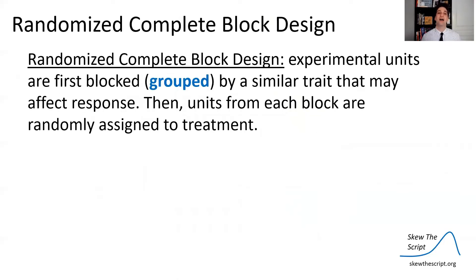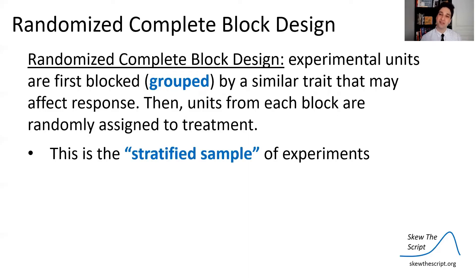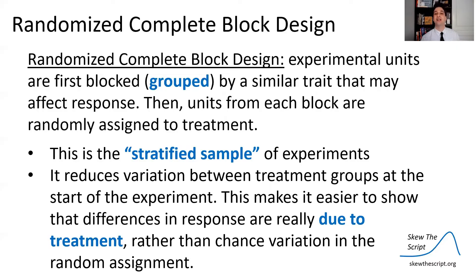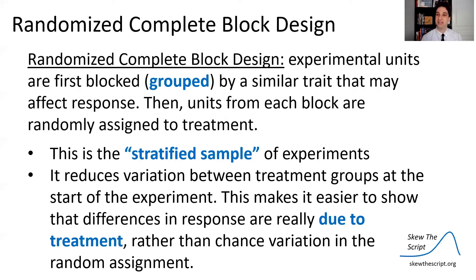We can use a randomized complete block design, where experimental units are first blocked or grouped by a similar trait they share, and then units from each block are randomly assigned to treatment and compared within those blocks. This is the stratified sample analogue for experiments, and it reduces variation between treatment groups at the start of the experiment, making it easier to show that differences in response are really due to treatment rather than chance variation in random assignment alone.